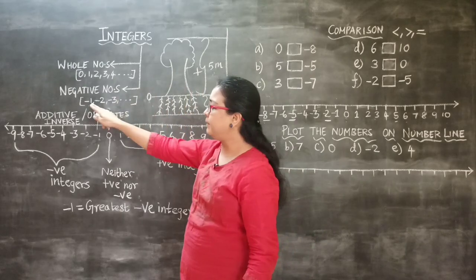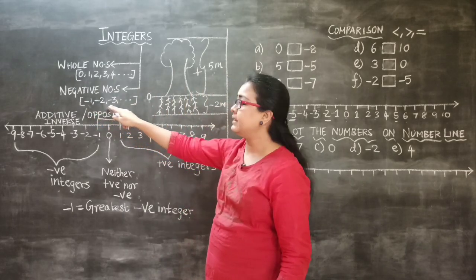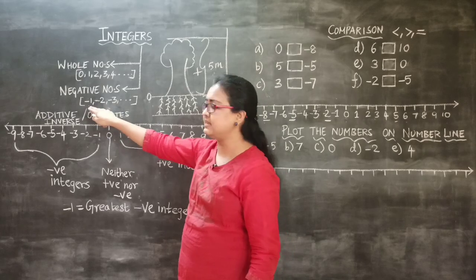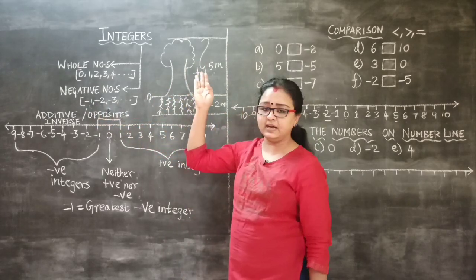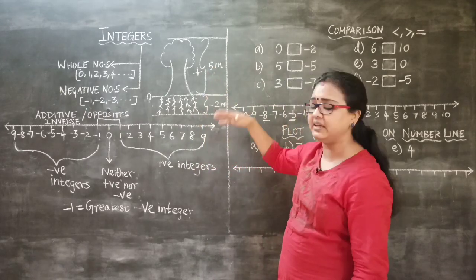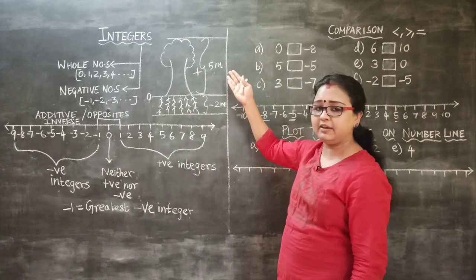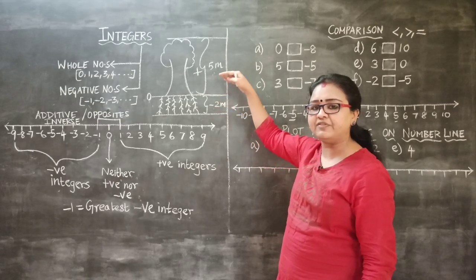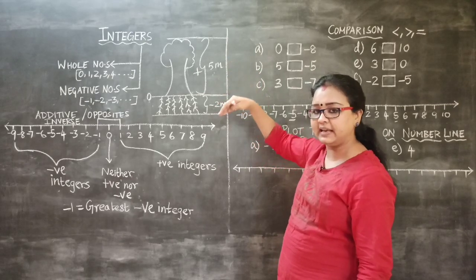So before 1, if there is a negative symbol, then we say it as minus 1, and similarly for the other numbers. Here I have drawn a tree to help you understand how to specify positive integers and negative integers.